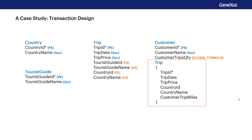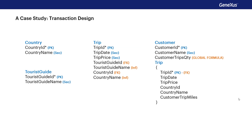At the second level, TripID is its primary key but also a foreign key. We see TripDate, TripPrice, CountryID, and CountryName — if we look at the structure of the trip transaction, these attributes are present there. Therefore, all of them are inferred from the value of their primary key, TripID. This means that in the second level of customer, these attributes are inferred by the TripID value. So CountryID, which was a direct foreign key stored in trip, is now an inferred foreign key on this second level of customer.